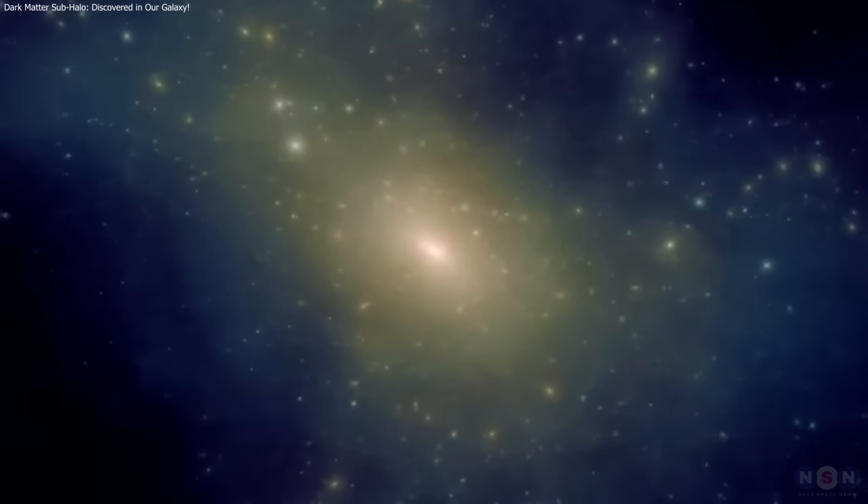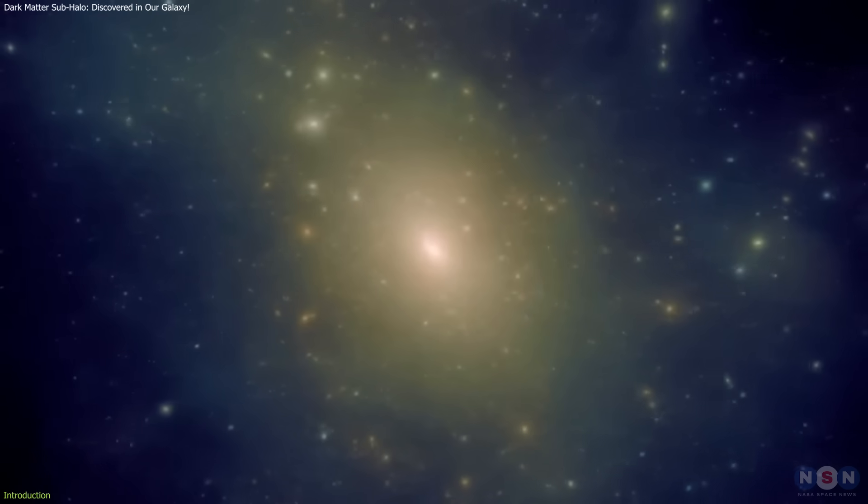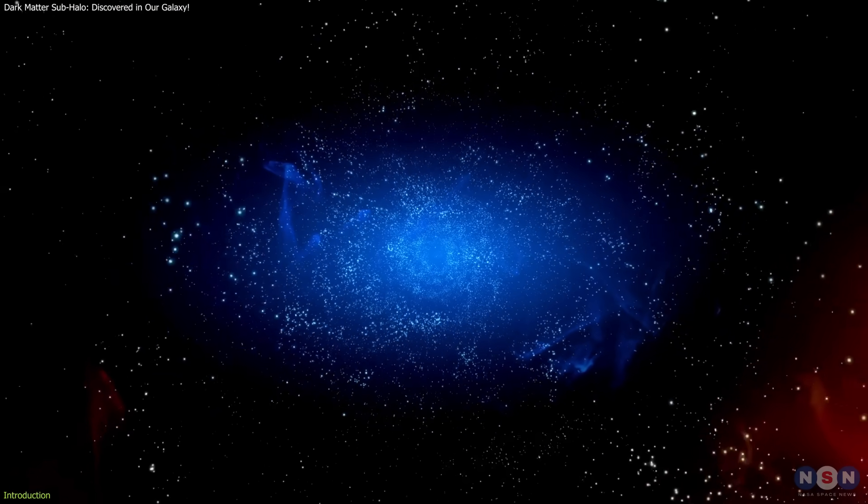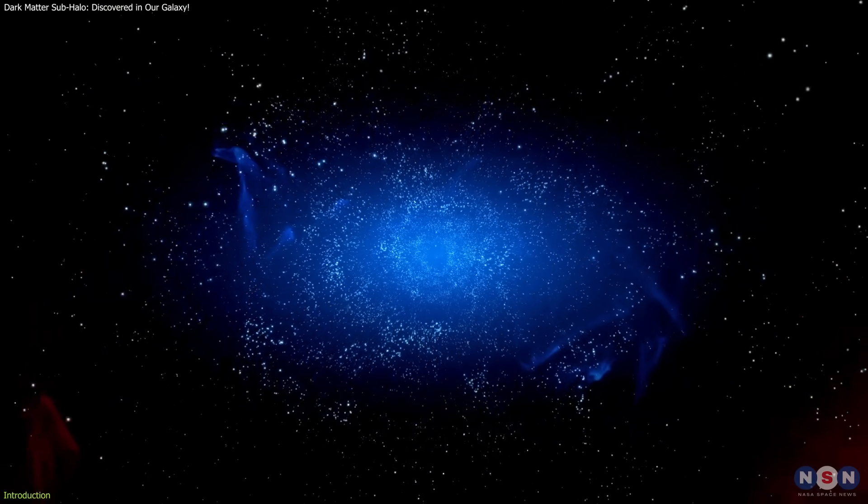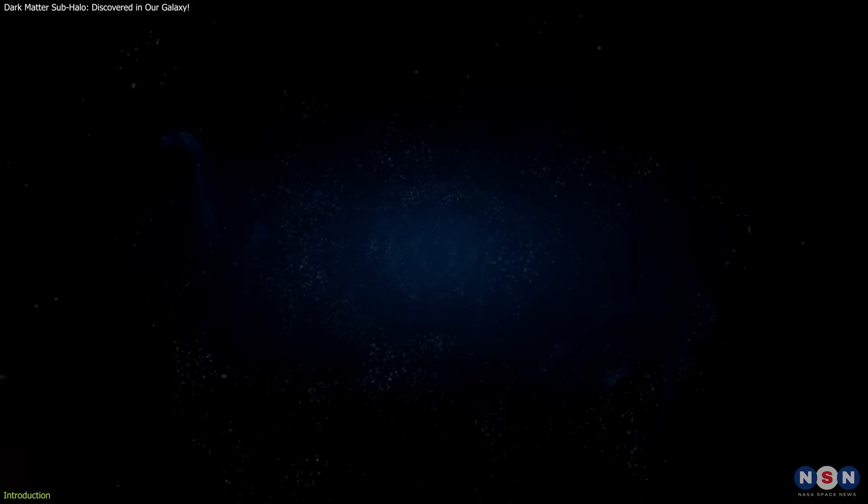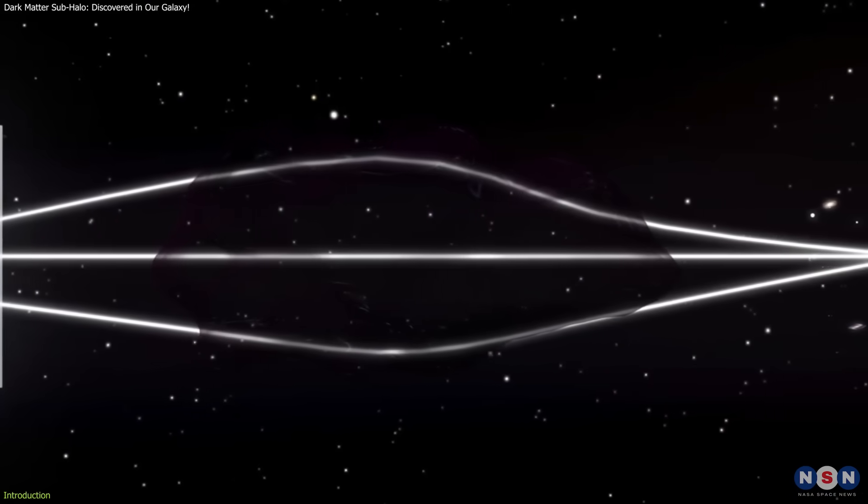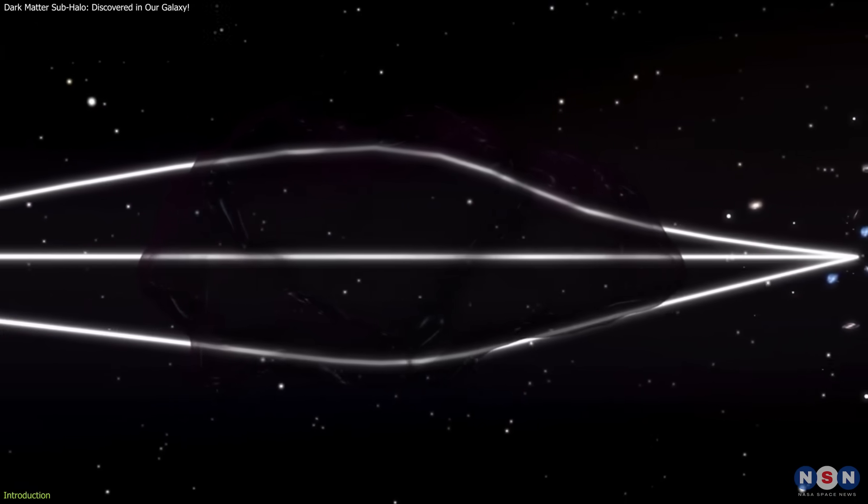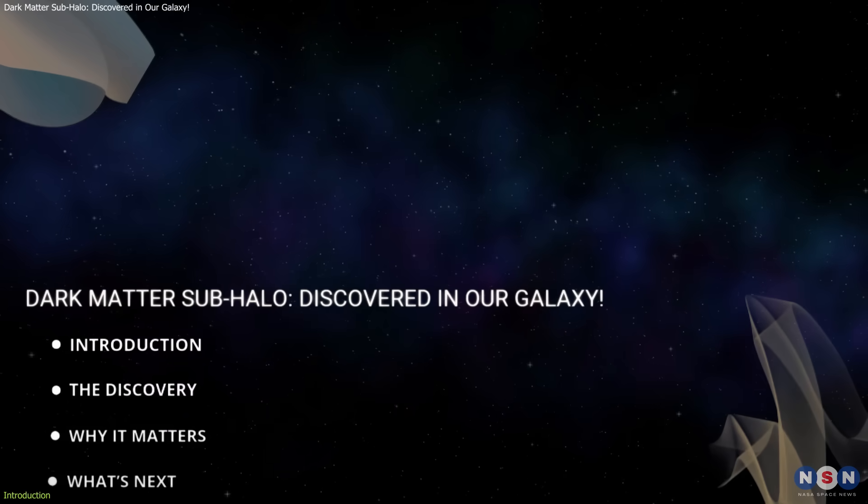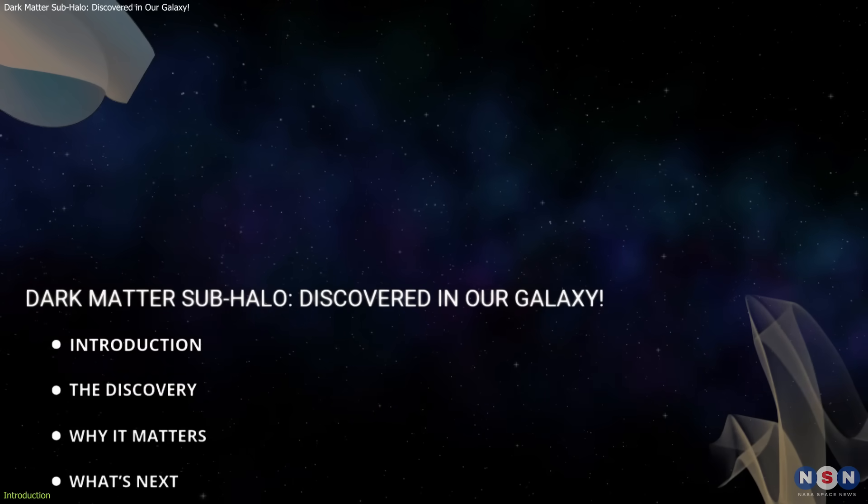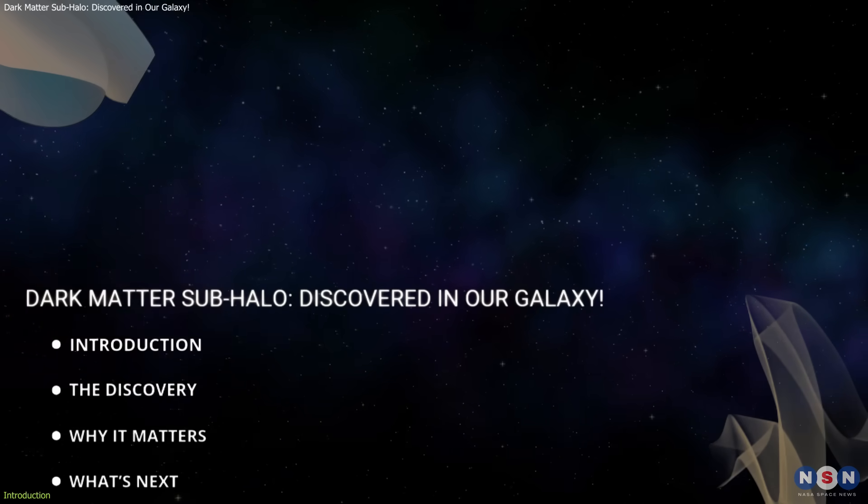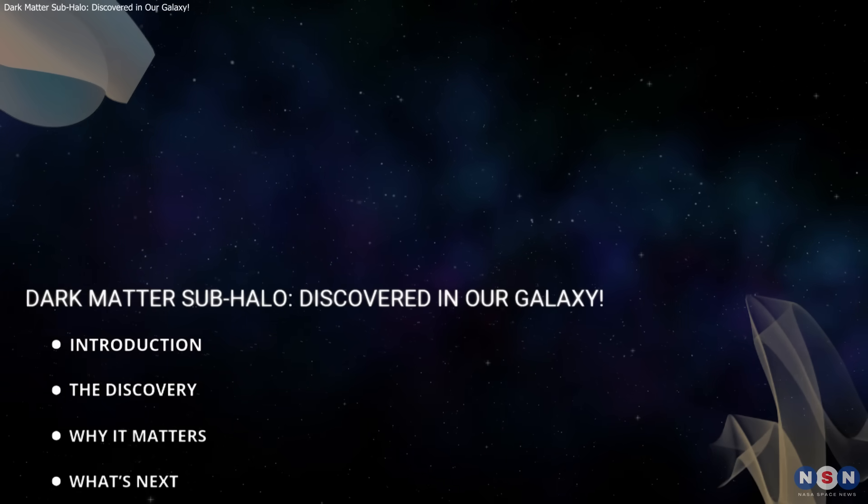Astronomers may have uncovered the first dark matter sub-halo in the Milky Way, a massive, unseen structure just a few thousand light years from Earth. If proven real, it could transform our understanding of how the galaxy is built. In this video, we'll explore the discovery itself, the pulsars that revealed it, and what this hidden structure means for the future of cosmology.